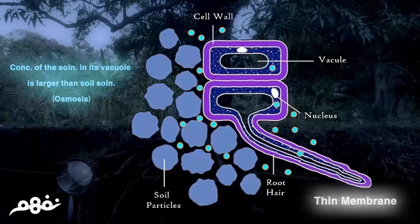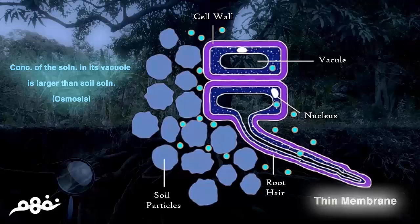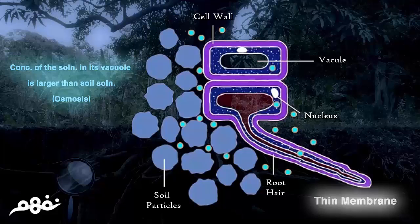So how can this simple part of the root absorb water and mineral salts from the soil? It has a mechanism called osmosis. Osmosis is the transmission of water molecules — which also carry mineral salts — through a semi-permeable membrane, from an area of high water concentration to an area of low water concentration. This occurs because the concentration of the solution inside the vacuole is larger than the soil solution concentration.